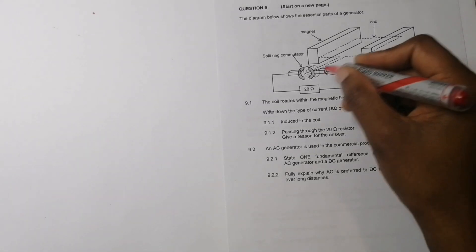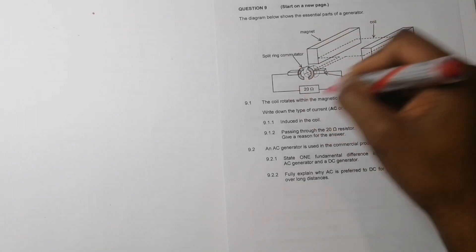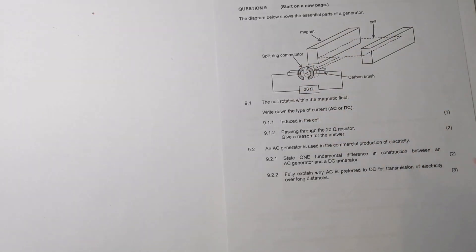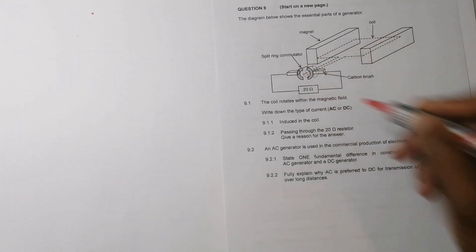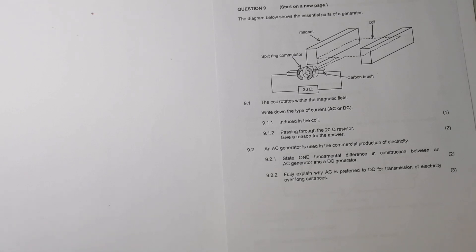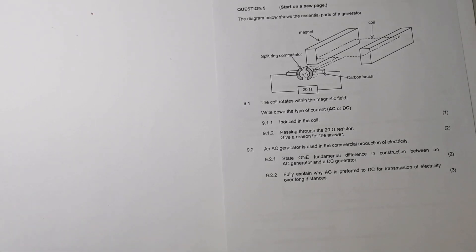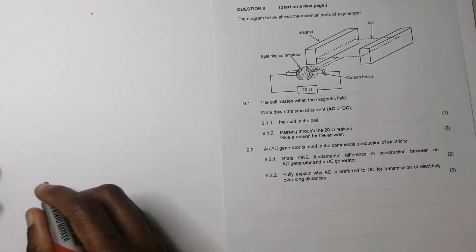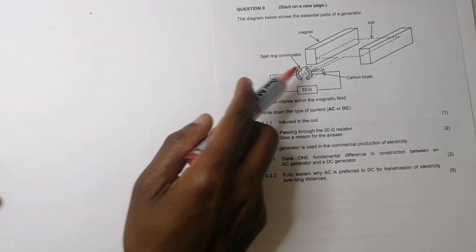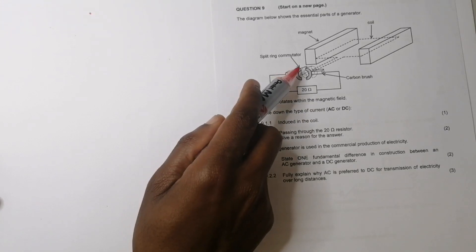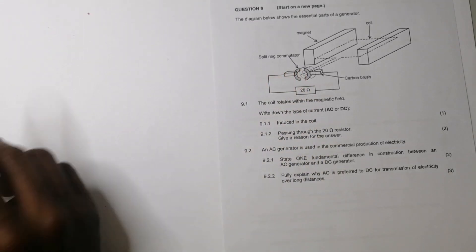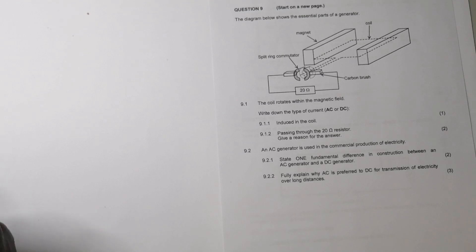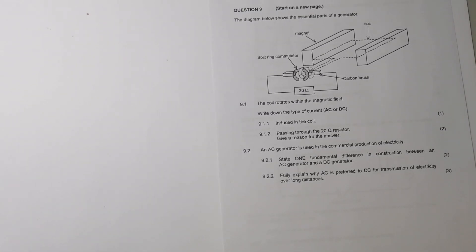Now, because this guy turns in half cycles, it means that the current would actually move back and forth. So as a result, the type of current that you'd have there would be AC within the coil itself. However, the current that you'd have outside would be DC.